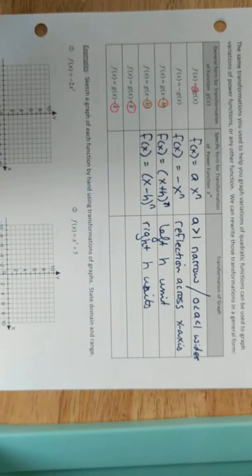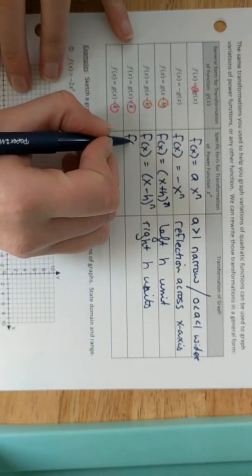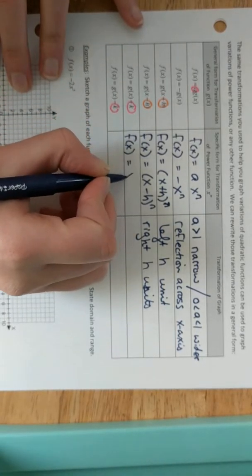If you remember from our quadratics, the plus h was a left shift and the minus h was a right shift. So those are kind of opposite of what we would expect on the inside right there. When we see that plus, we think right perhaps, but it really does mean left.